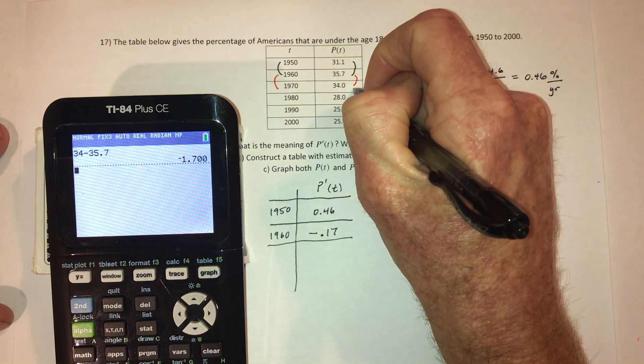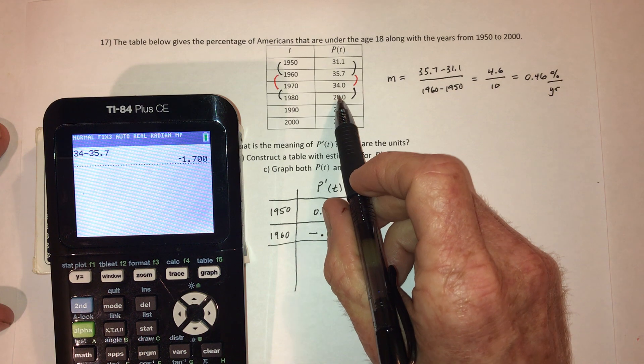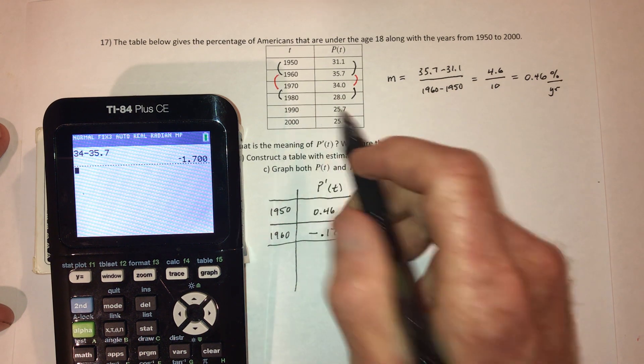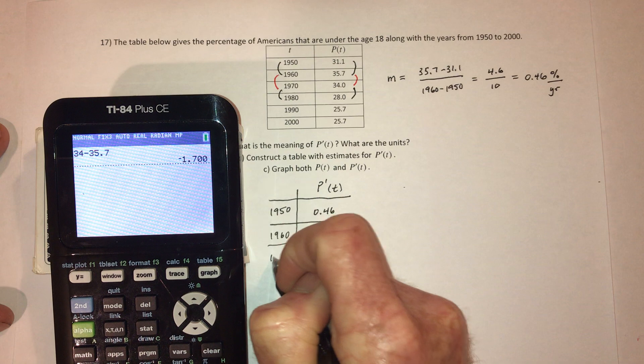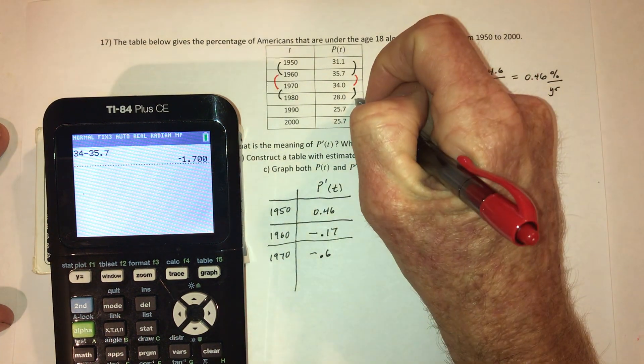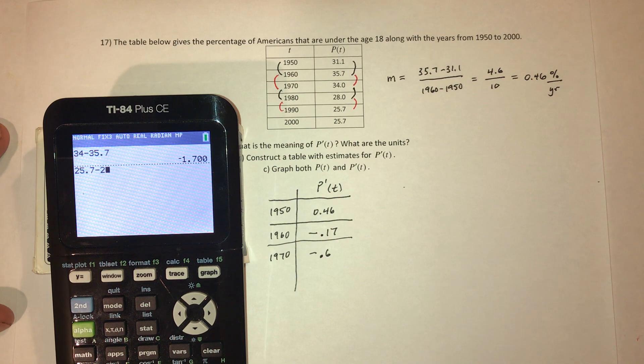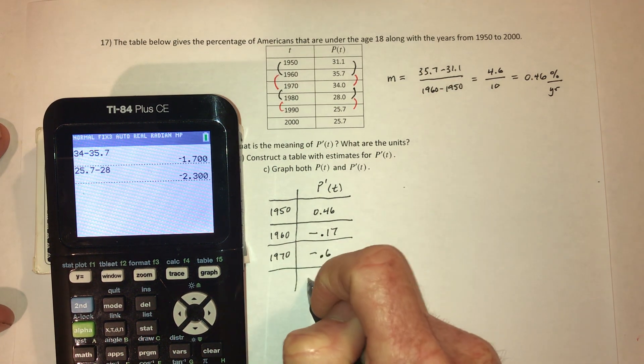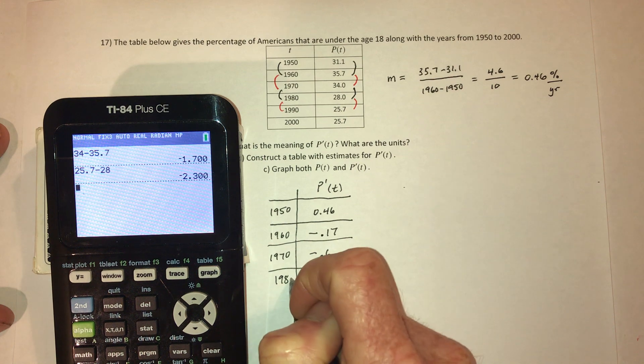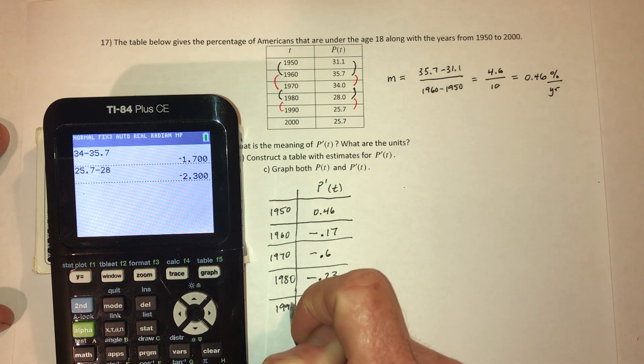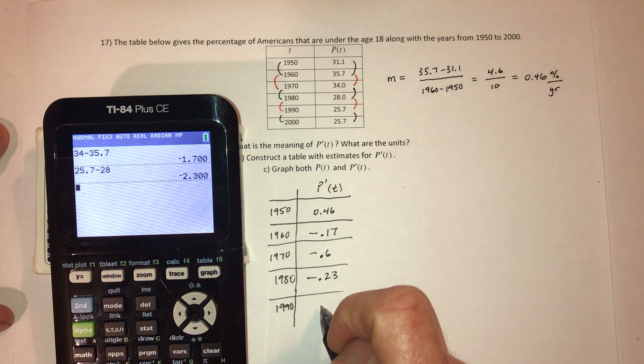And then do the next pair. And then 28 minus 34. I can even do that without a calculator. That's 6. Divided by 10 is 0.6. But we're going 28 minus 34, so that's negative. And then do the next pair. So 25.7 minus 28. That's negative 2.3. And then divide by 10. And then for the next pair, that difference is actually 0. Don't even need a calculator.